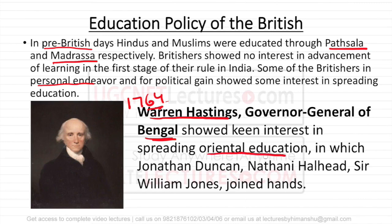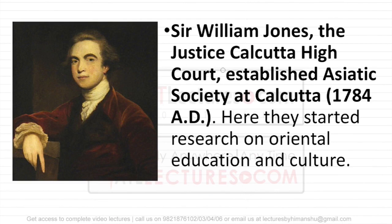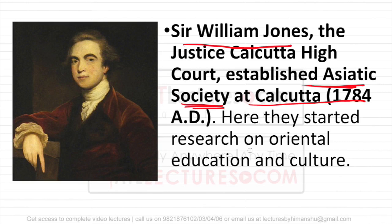Oriental Education means the original traditional education in India. Jonathan Duncan, Nathalie, and Sir William Jones helped him in pursuing this kind of education. Sir William Jones was the Justice of Calcutta High Court. What he did was he established the Asiatic Society at Calcutta in 1784 AD. He started research on Oriental Education — the basic local education, the way they teach, and the culture of India.